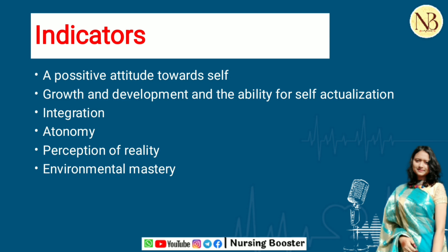The second indicator is growth, development, and ability for self-actualization. These indicators correlate with whether the individual successfully achieved tasks associated with each level of development. The third indicator is integration, which includes the ability to adaptively respond to the environment and the development of a philosophy of life — both of which help the individual maintain anxiety at a manageable level in response to stressful situations.